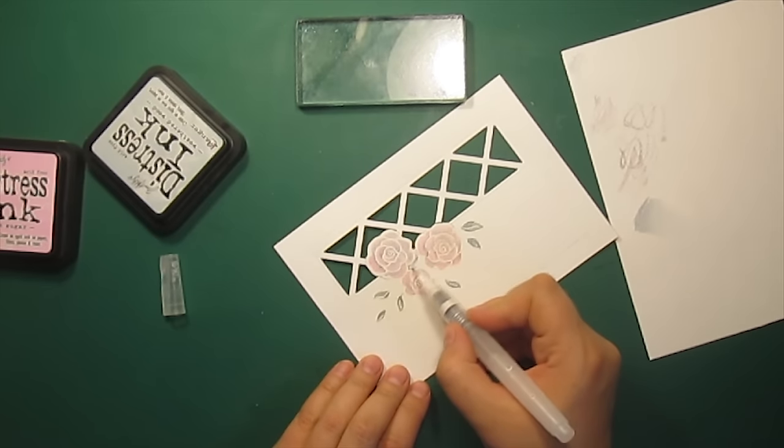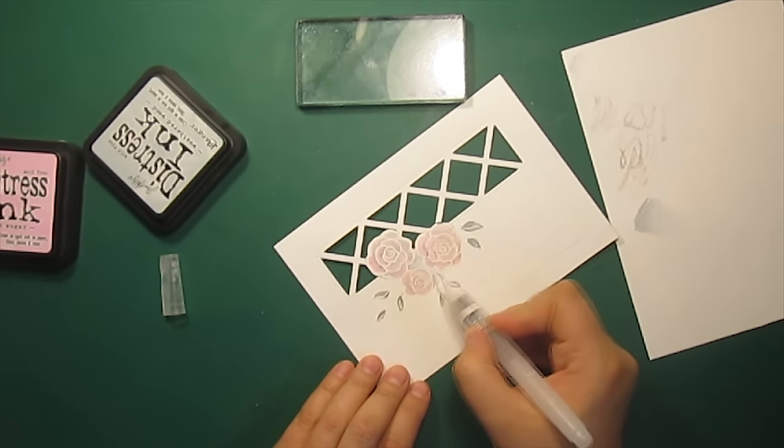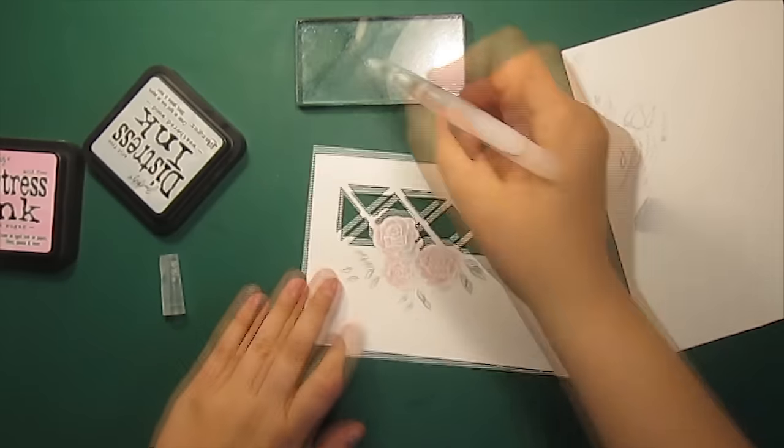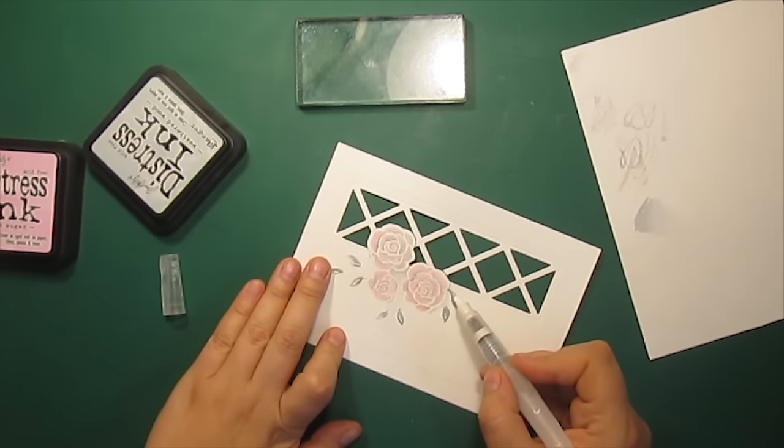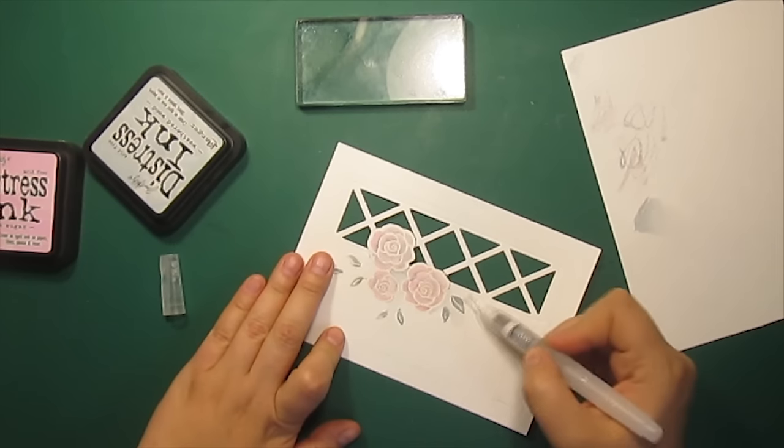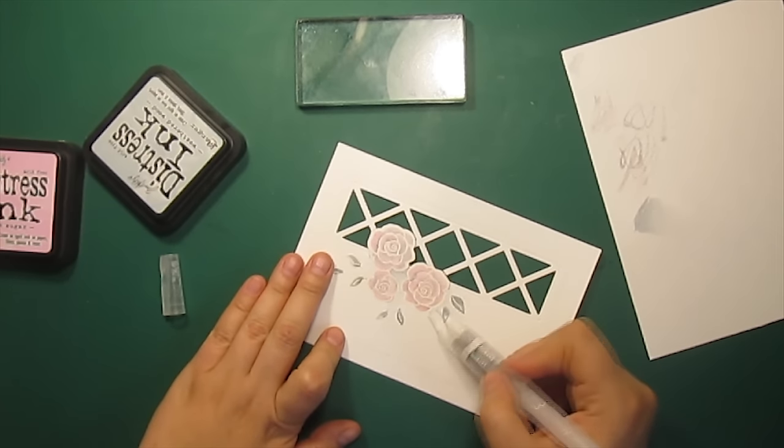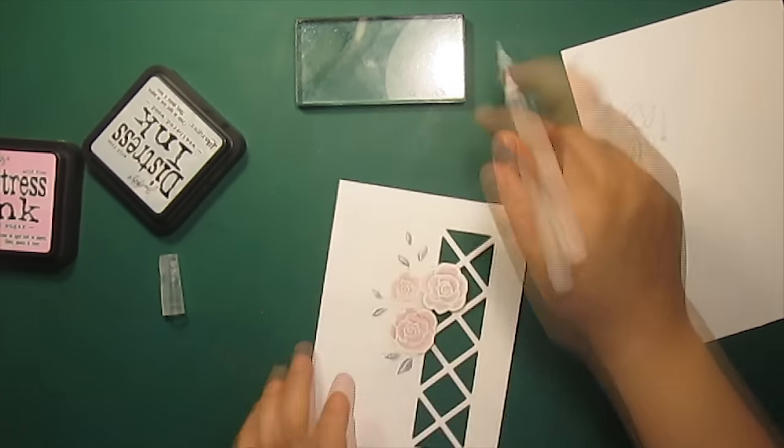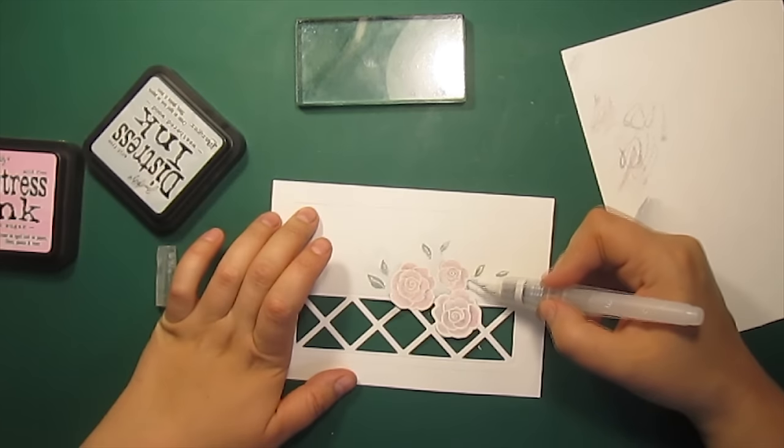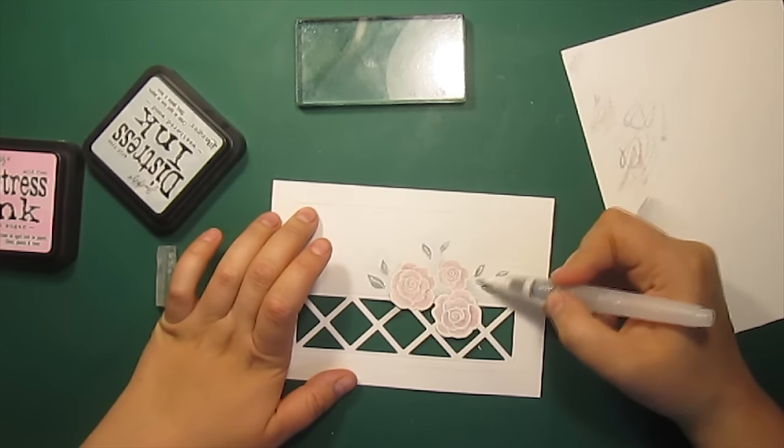To create a background I'm picking up some grey ink with a water brush, applying it close to the image and then I'm dragging it outwards until the color fades completely and only the clear water remains. This way we can get a simple and very soft background.